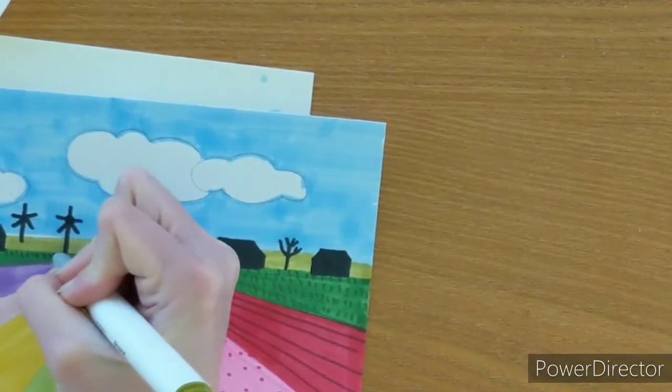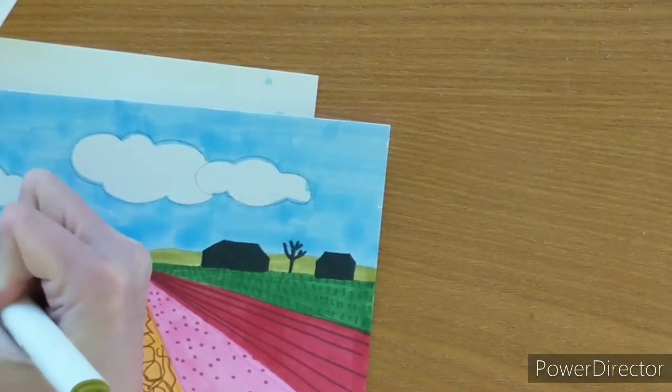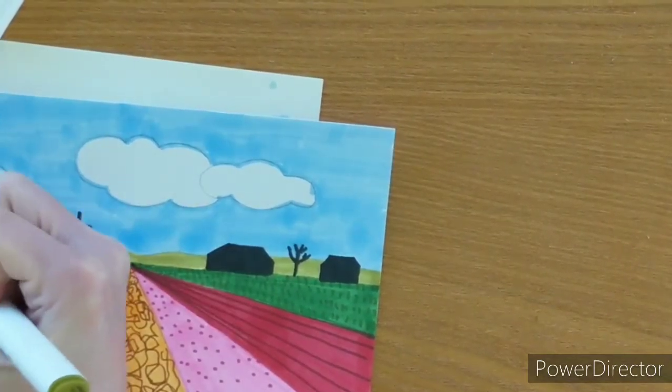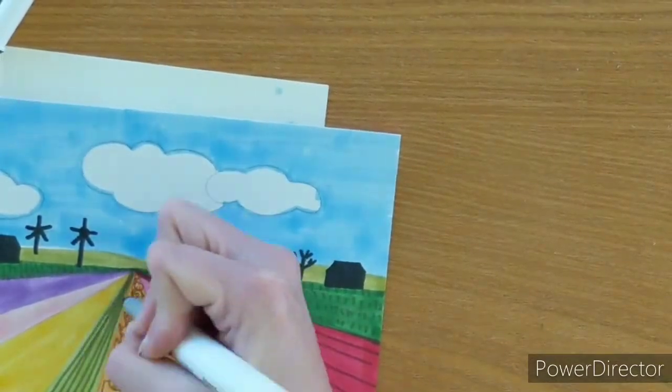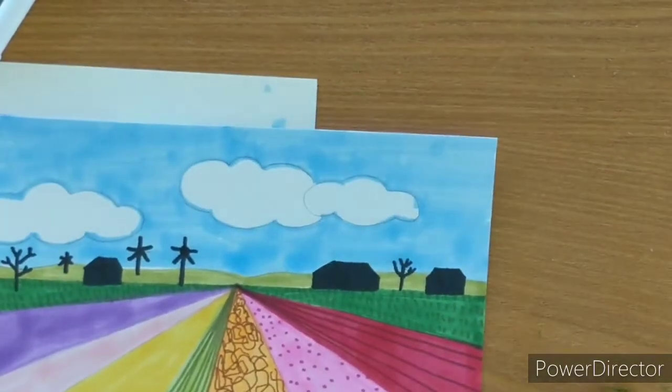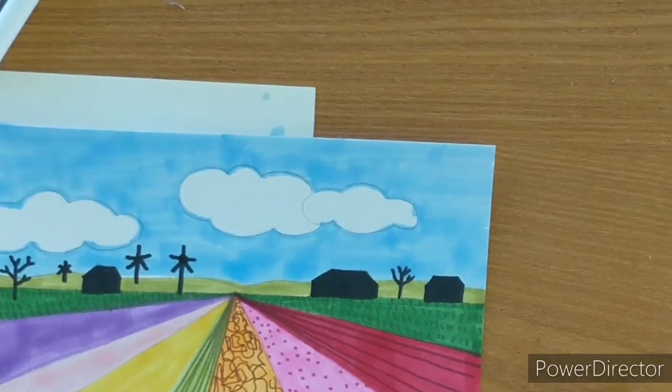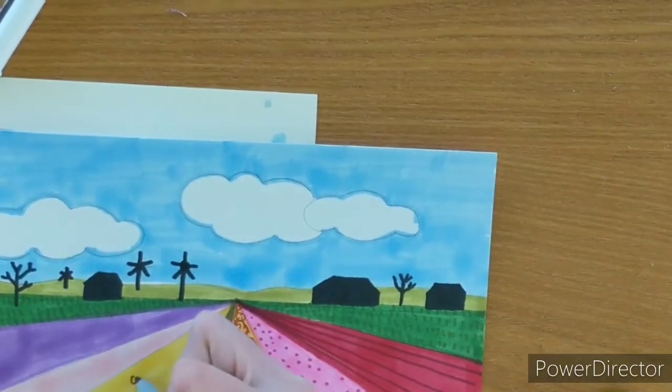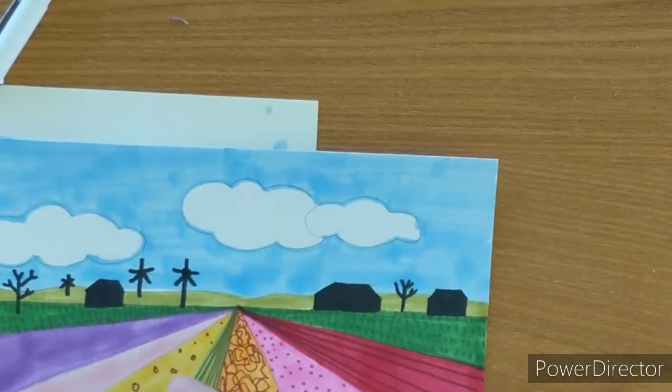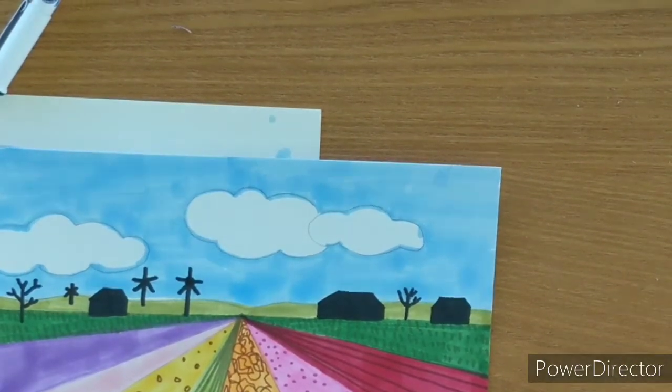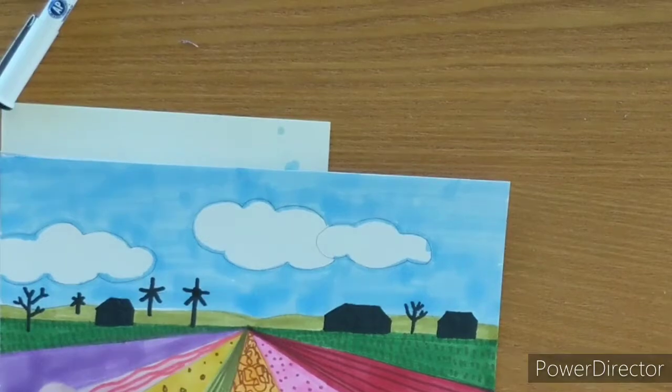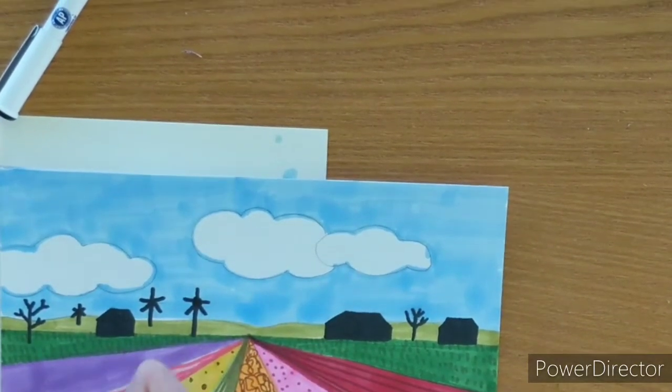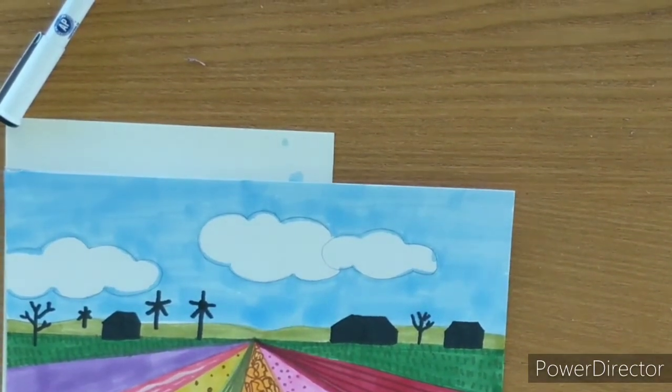Objects further away will also be lighter in value. I'm coming in and adding some texture in the grass with different values of the same color. I'm drawing some lines that are following that point of perspective that we've talked about. I've done dots and as you can see they're getting smaller as they get further away. And wavy lines—it's totally up to you if you want to just keep it the plain color, you can do that as well.